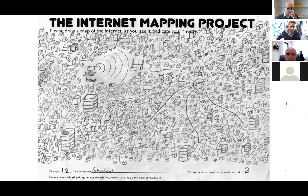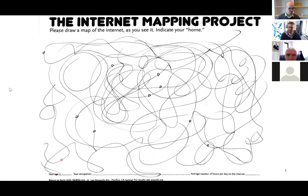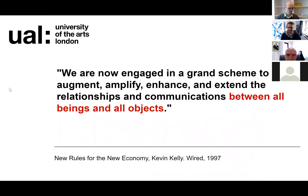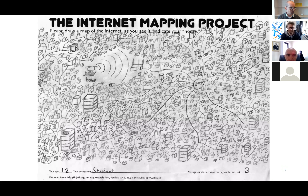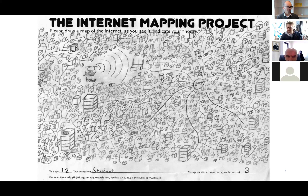That quote comes from Kevin Kelly — one of the few futurists I actually like, because he said a lot of things in the early 90s that have actually come to pass. He does this really interesting internet mapping project. It's a fascinating thing to do with students: literally ask them to draw a map of the internet as they see it and indicate their home. What's really interesting is that everybody visualises it differently, which is one of the reasons why it can be quite difficult to get going in a networked way — when you say 'digital', everybody's thinking of something different.